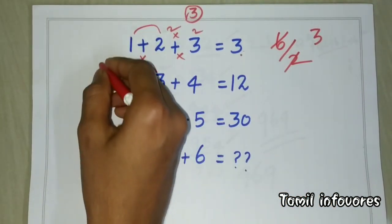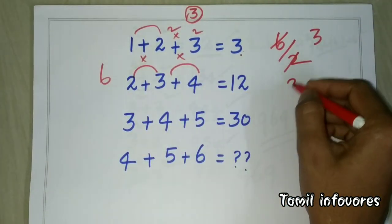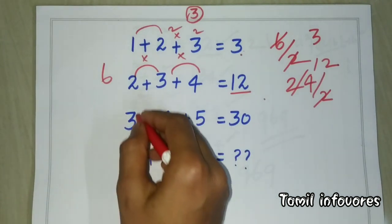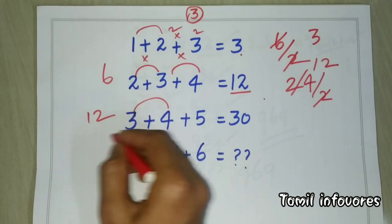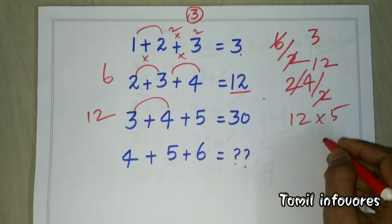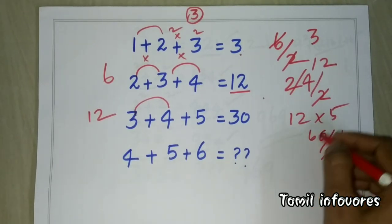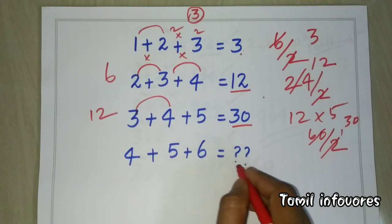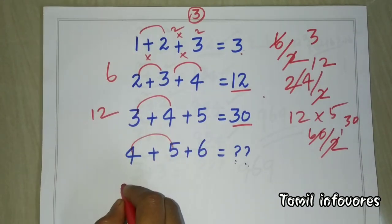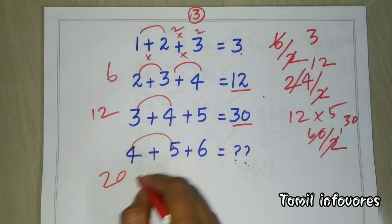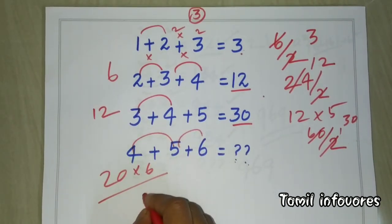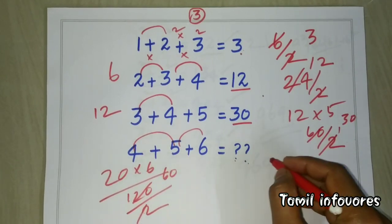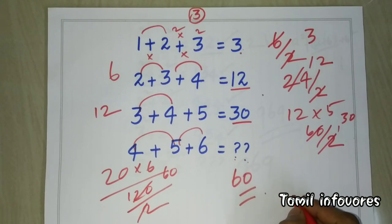2 into 3 is 6; 6 into 4 is 24; 24 divided by 2 is 12. And 12 is the third rule result. Then 3 into 4 is 12; 12 into 5 is 60; 60 divided by 2 is 30. Last rule: 4 into 5 is 20; 20 into 6 is 120; 120 divided by 2 is 60. The answer is 60.